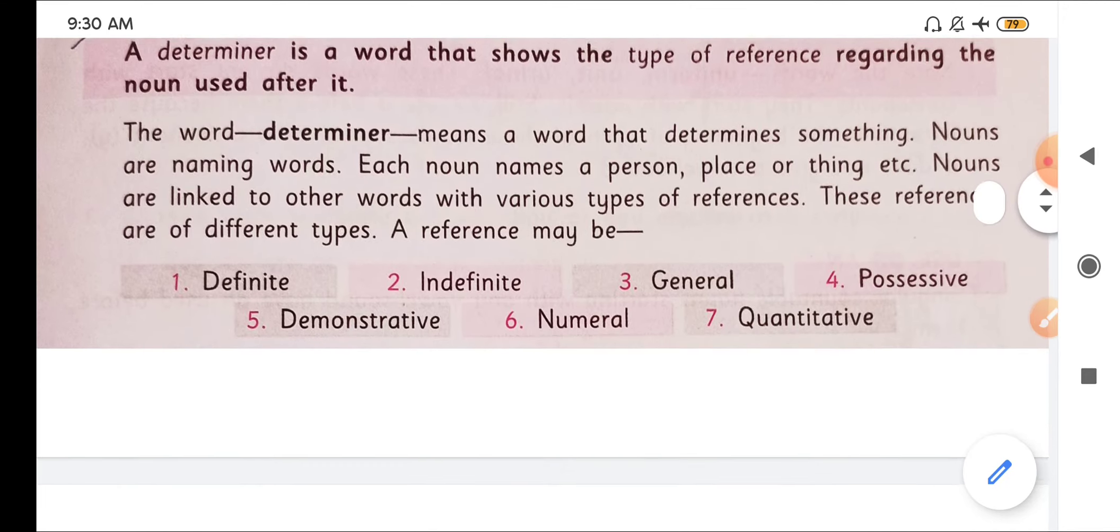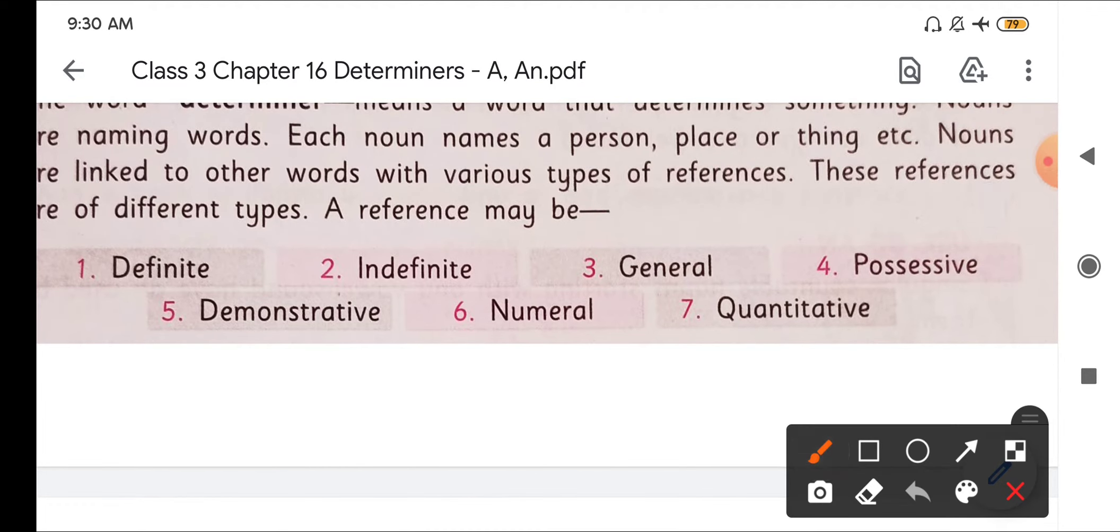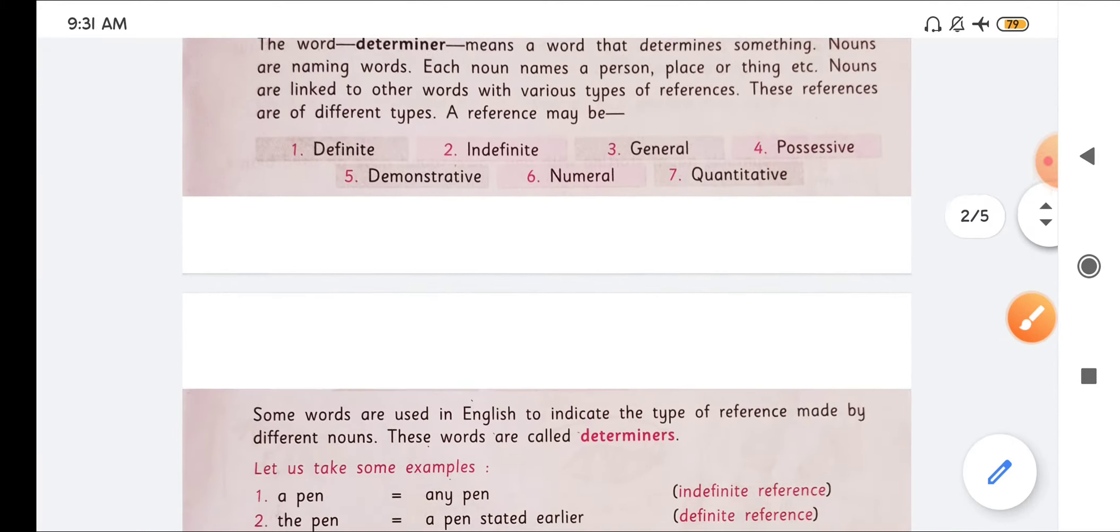So what is the first one here you can see. The first type is definite type. Second is indefinite. Third is general. Fourth is possessive. Fifth is demonstrative. Sixth is numerical. And seventh is quantitative. We will learn these types one by one.